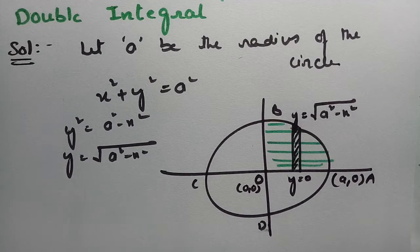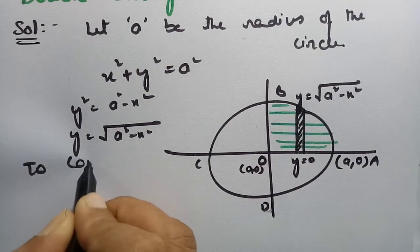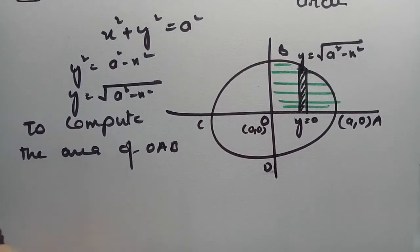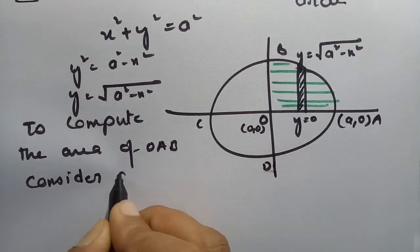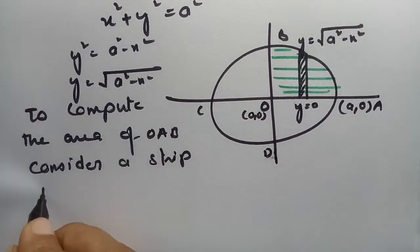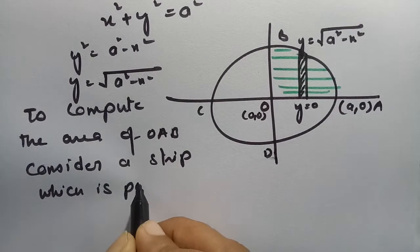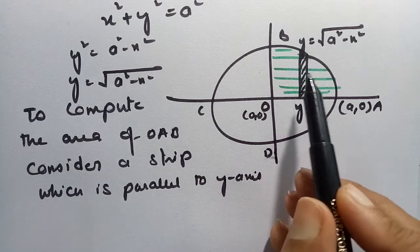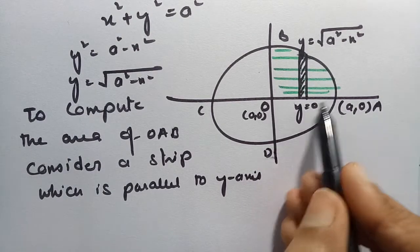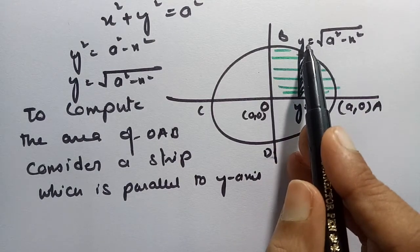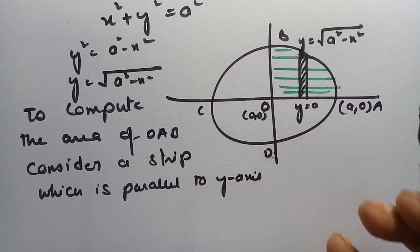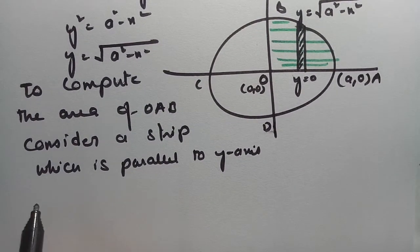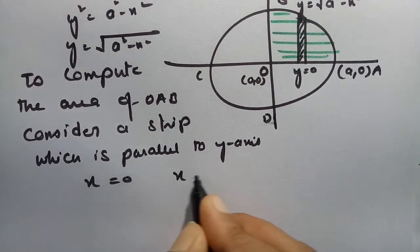To compute the area of OAB, consider a strip which is parallel to the y-axis. This strip is parallel to the y-axis; in terms of y, this line is y = 0, and the circle equation in terms of y is y = √(a² − x²). The strip moves from one end to the other, covering every point of the OAB area.